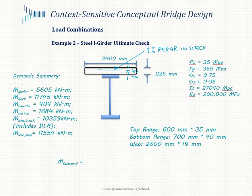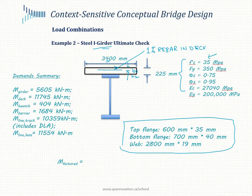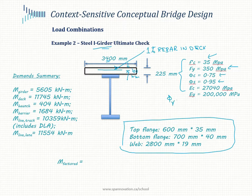Let's look at the steel eye girder ultimate capacity check example: a 3400 mm wide deck in concrete and a steel girder with the sizes given. Here are the material properties: f'c for the deck, fy for the structural steel, and fs = 0.9. The phi_r for the rebar is 0.90 and fy for the rebar is 400 MPa.